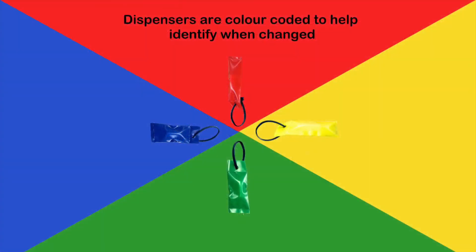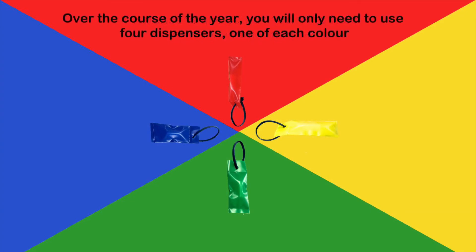Dispensers are seasonally color coded. This is to help identify when dispensers are changed. Over the course of a year, you will only need to use four dispensers, one for each color.